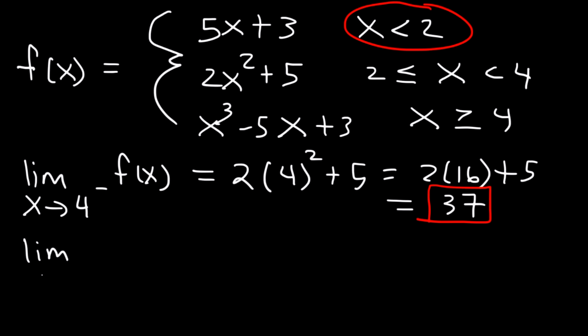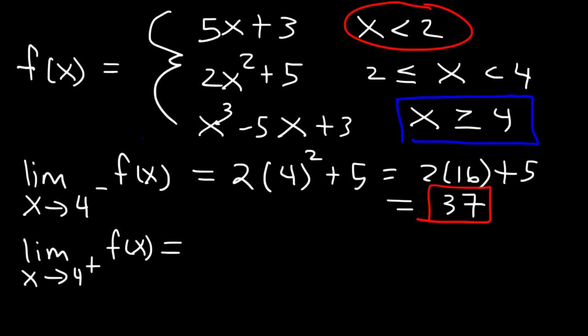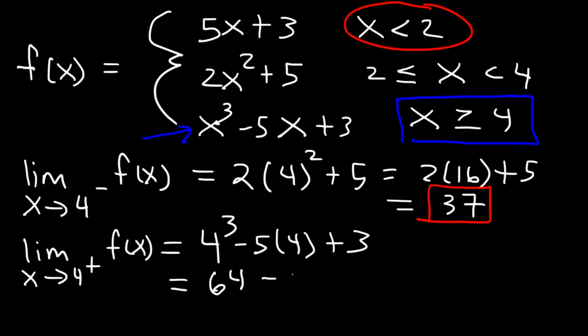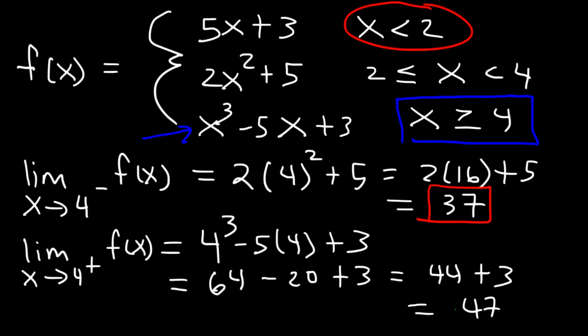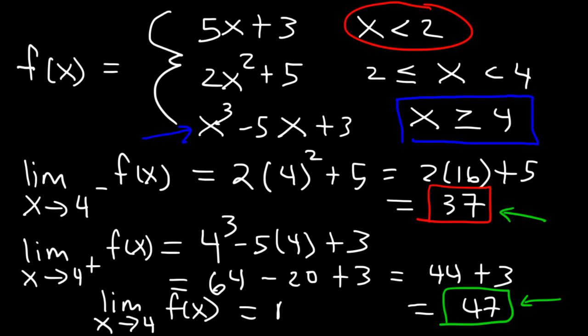What is the limit as x approaches 4 from the right side? When x is greater than 4, we use x cubed minus 5x plus 3. Plugging in 4: 4 cubed is 64, 5 times 4 is 20, and 64 minus 20 plus 3 equals 47. Since the left-sided limit (37) and right-sided limit (47) don't match, the limit as x approaches 4 does not exist.